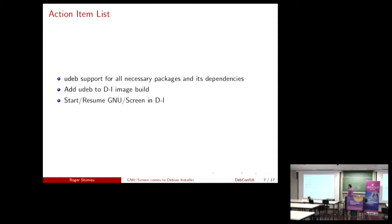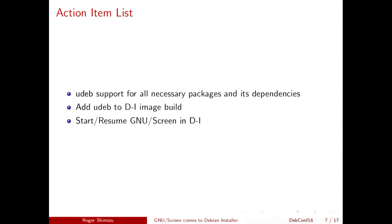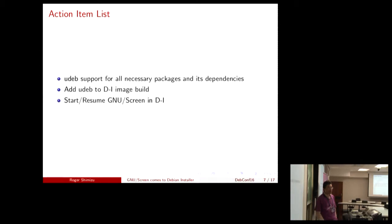How to achieve it? After some research I found I need to support the screen binary package and its dependencies — such as libraries — as UDEB packages. UDEB is the special format for the embedded installer which minimizes the whole image by removing documentation, for example. So we have to create UDEB packages for screen and its libraries, and add those UDEBs into the embedded installer image. Third, we need to write a script to start GNU screen in the embedded installer.